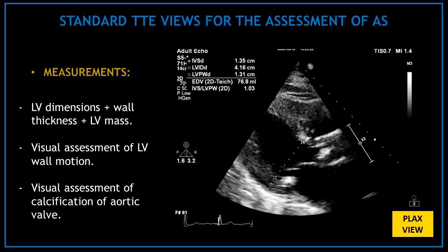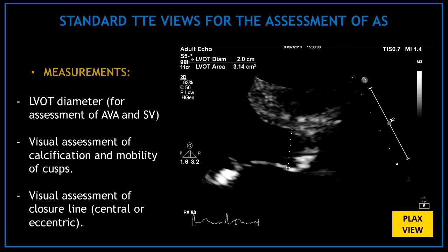In the parasternal long axis view, measure the left ventricular dimensions, wall thickness, and left ventricular mass. Perform a visual assessment of the left ventricular wall and calcification of the aortic valve. Then obtain a zoom view of the aortic valve and measure the left ventricular outflow tract diameter — this is needed for assessment of the aortic valve area and stroke volume.